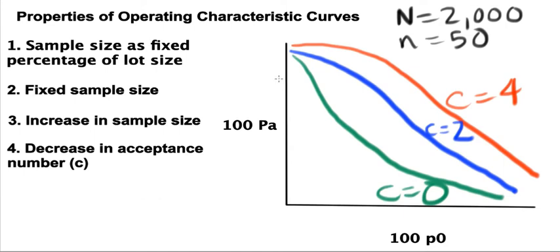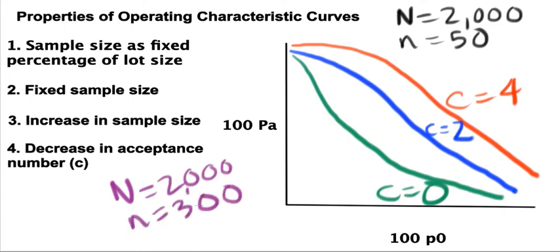So it might seem advantageous to simply decrease the sample size in your acceptance sampling plan. However, this is not always the case. Let's look at an acceptance sampling plan that is very similar to the green one, which had a sample size of 50, lot size of 2,000, and acceptance number of 0.